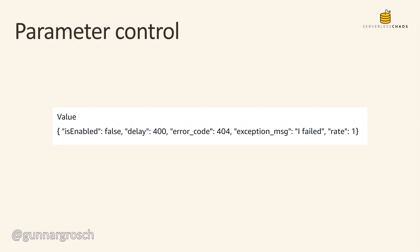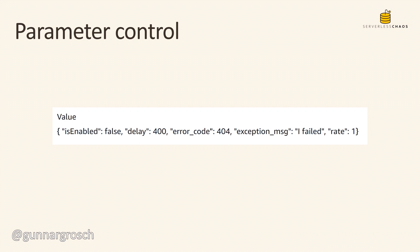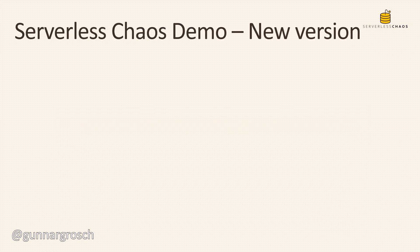We still have control of the failure injection using a parameter stored in parameter store. Now we have a couple of additions to it: besides saying whether it's enabled or not and adding the delay for latency, we can now input an error code — like a 404 in this example — and we can add an exception message, in this case 'I failed'. We also have the rate: a rate of 1 means every invocation, 100%; a rate of 0.5 means 50%, so half of the time.